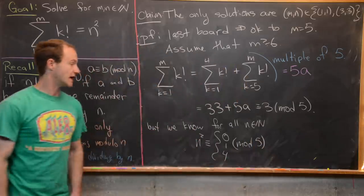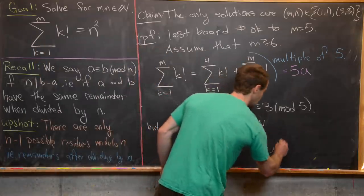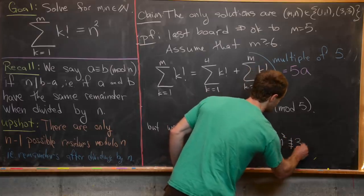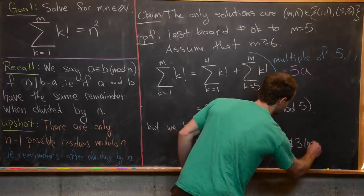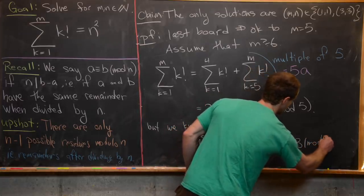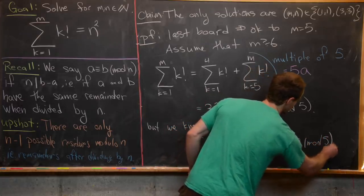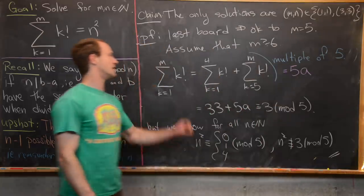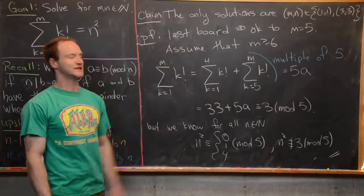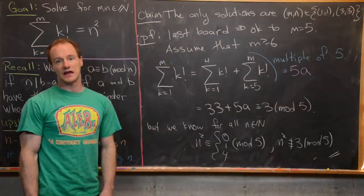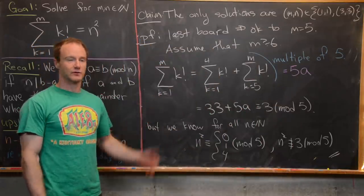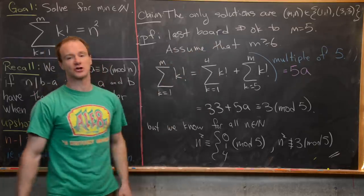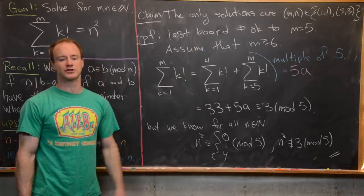Reducing modulo 5, we see 33 + 5A ≡ 3 mod 5, since 5A contributes remainder 0 and 33 has remainder 3 when divided by 5. But for all natural numbers n, n² is congruent to 0, 1, or 4 mod 5, and nothing else. So n² is never congruent to 3 mod 5. This finishes the argument: there are no solutions for m ≥ 6, and our only two solutions are (m,n) = (1,1) and (3,3).